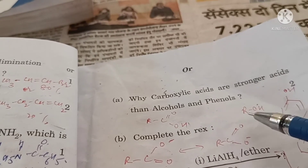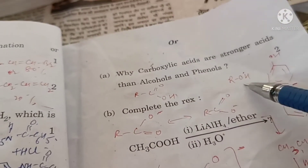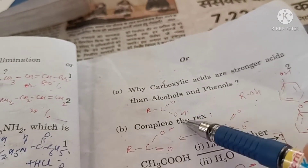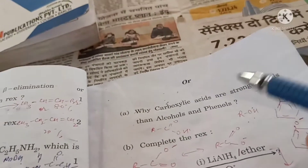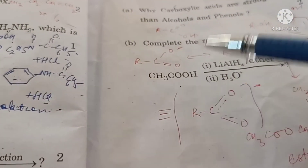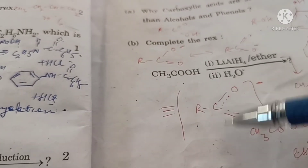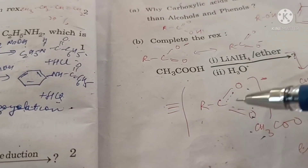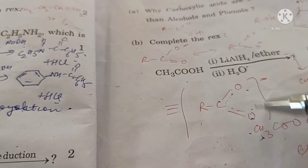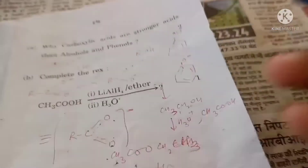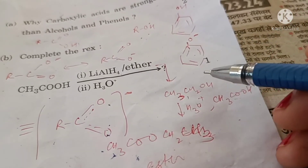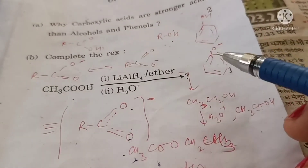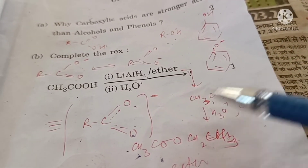Why are carboxylic acids stronger acids than alcohols and phenols? Both donate protons to form carboxylate, alkoxide, or phenoxide ions respectively. In the carboxylate ion, the resonating structures are equivalent and contribute more to stability, making the product more stable and the acid stronger. Also, in carboxylate ions the negative charge is supported by two electronegative oxygen atoms, whereas in phenoxide it is supported by less electronegative carbon atoms of the benzene ring.